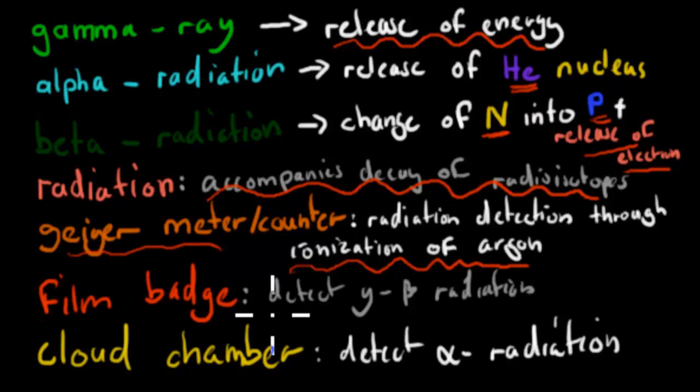Film badge, that helped us detect beta and gamma radiation. And that was done because it would absorb radiation and change color. So people who were on radiation would be able to tell from that change in color. Cloud chamber, that detected alpha radiation.